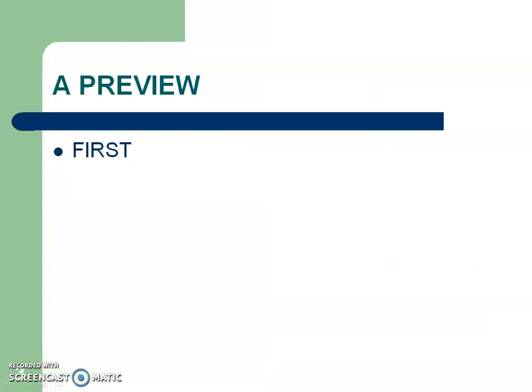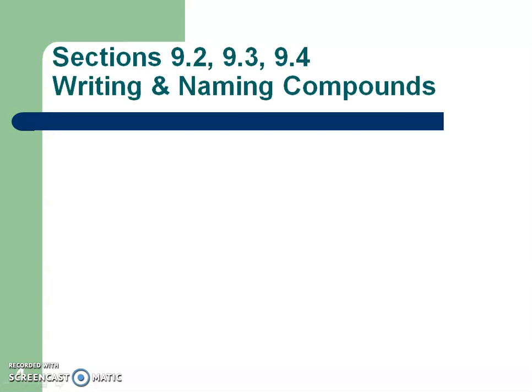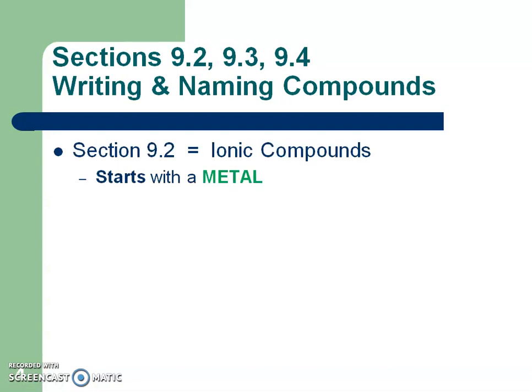First, a quick little preview. In sections 9.2, 9.3, and 9.4, you're going to be writing and naming compounds for three different types of compounds. In Section 2, we're going to be dealing with ionic compounds. Those compounds always start with the metal. Metals are located to the left of that stair-step line, so anytime you see a metal as the first part of a compound, you need to think: I'm going to name it the ionic way.